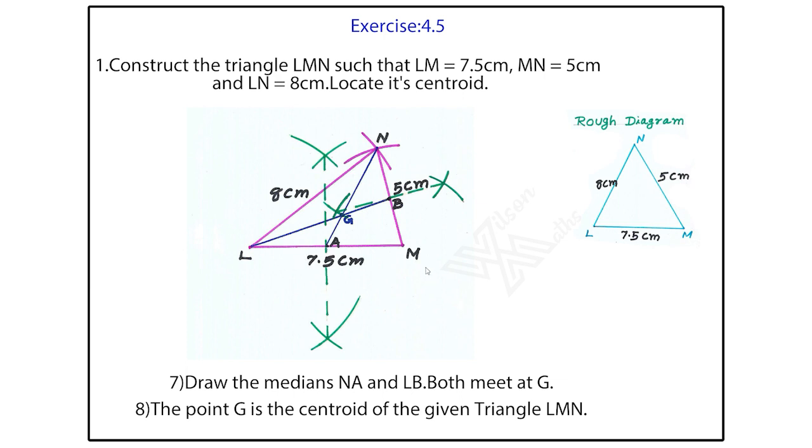In the same manner, MN which is middle point B, opposite side L. L and B join it. This median, both the median meet at G. This point G. The question what we have to find out, locate its centroid. So, the point G is the centroid of the given triangle LMN.